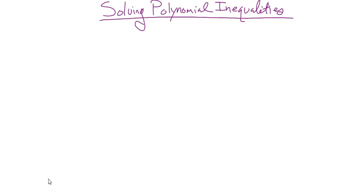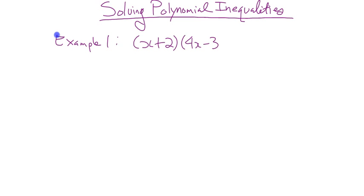Let's do example number one — a nice easy one in factored form. Solve: (x + 2)(4x − 3) ≥ 0. Usually instructions should precede the question, but I wrote the question first. So we want to solve that.